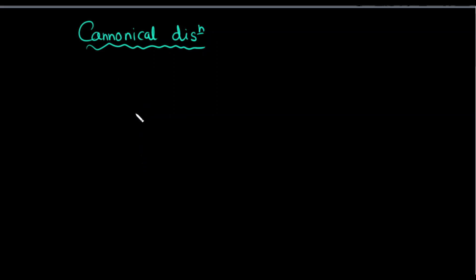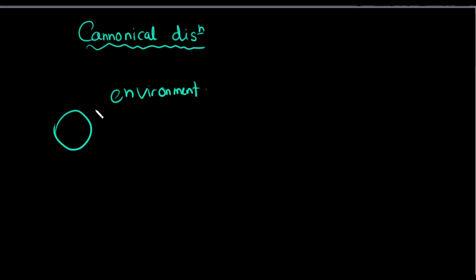We are talking about Canonical Distribution. We are talking about the isolated system and the environment. We have a system in thermal contact with the environment — we are exchanging heat with the environment. This system is also available as a whole, interacting with the larger environment.